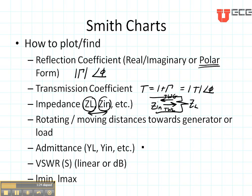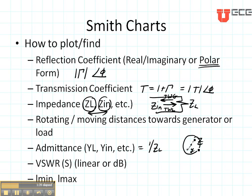The admittance, like Y-L, is 1 over Z-L, and that is found by translating through the Smith chart. You look at the center of the Smith chart — if you happen to have Z on one side of the center, you have Y on the opposite side. So the admittance and impedance are found by translating through the center of the Smith chart.